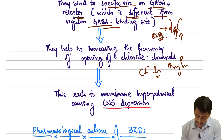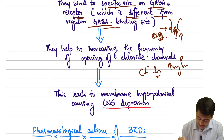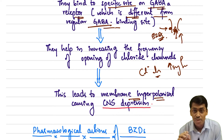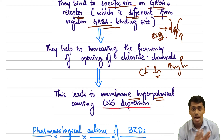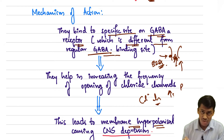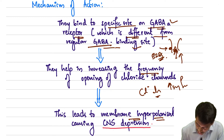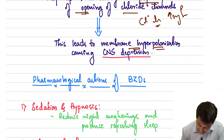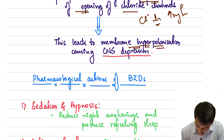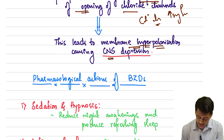They increase the frequency — not the duration — of opening of the chloride channels. This leads to more intake of chloride ions, causing membrane hyperpolarization, and finally CNS depression. So in summary: benzodiazepines bind to a specific site on the GABA-A receptor, increase frequency of chloride channel opening, leading to membrane hyperpolarization and CNS depression.